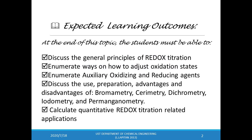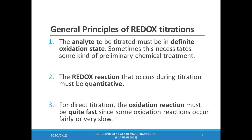These are the learning outcomes for this lecture. After watching this video, you must be able to discuss the general principles of redox titrations, enumerate ways on how we can adjust the oxidation states of our analyte, enumerate some auxiliary oxidizing and reducing agents, and discuss the use, the preparation, the advantages and disadvantages of bromometry, cerimetry, dichrometry, iodometry, and permanganometry. And lastly, you must be able to calculate quantitative redox titration related applications.